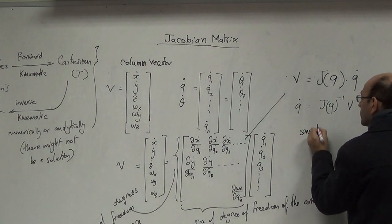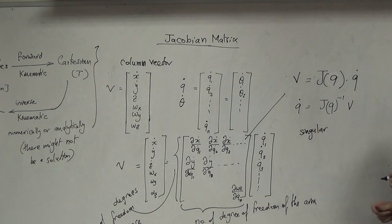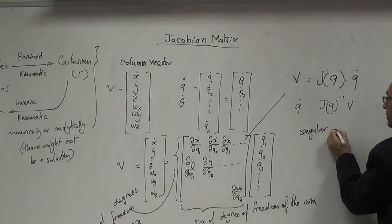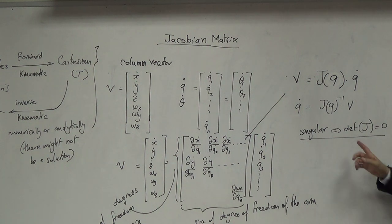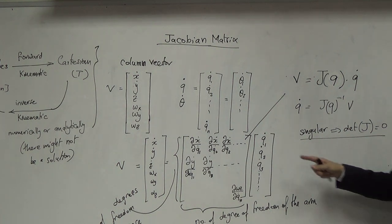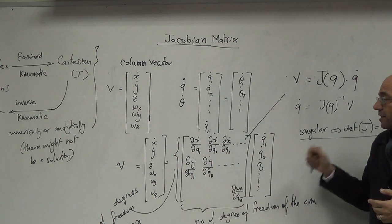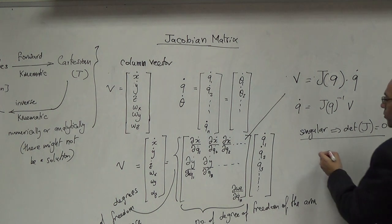إيش يعني الـ matrix singular؟ بتطلع determinant تبعها 0. الـ matrix إذا كانت determinant تبعها 0 بتكون singular، معناها هي rank deficient. إيش يعني rank deficient؟ يعني الـ rank أقل من الـ order تبعها. إذا كانت 6 by 6 والـ rank تبعها...